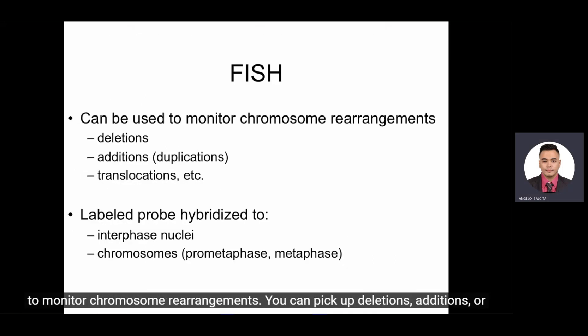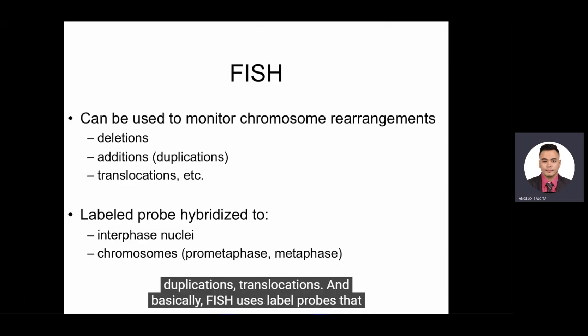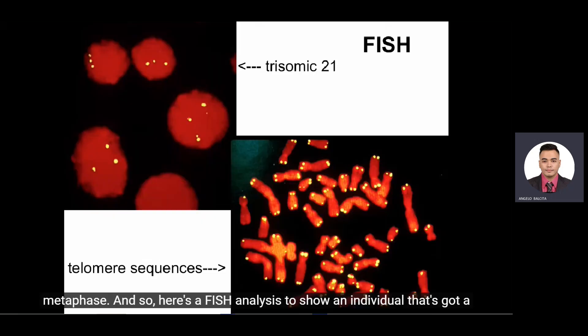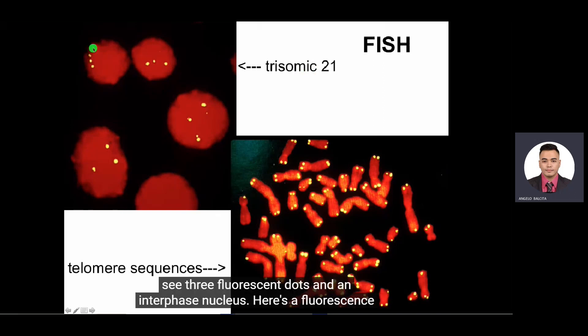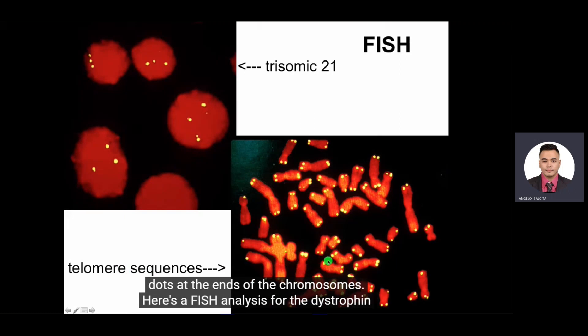FISH can be used to monitor chromosome rearrangements — you can pick up deletions, additions, duplications, and translocations. FISH uses labeled probes that hybridize to interphase nuclei or to chromosomes at pro-metaphase and metaphase. Here's a FISH analysis showing an individual with trisomy for chromosome 21 — the probe was for chromosome 21, and you can see three fluorescent dots in an interphase nucleus. Here's a fluorescence in situ hybridization for telomere sequences, showing fluorescent dots at the ends of the chromosomes.